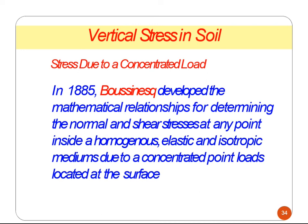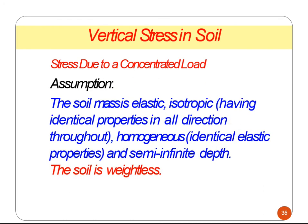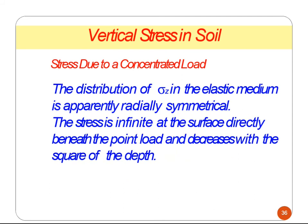The Boussinesq formula applies to a concentrated point load on a homogeneous, elastic, and isotropic medium. The key assumptions are: the soil mass is elastic, isotropic — having identical properties in all directions — meaning the same characteristics throughout the entire soil mass. The formula is not applicable for variable soil mass. The medium is semi-infinite in depth, meaning we need to assume a certain depth up to which we find stress distribution. The soil is also assumed to be weightless — we do not consider the self-weight of soil; only the stress from the applied load is calculated.